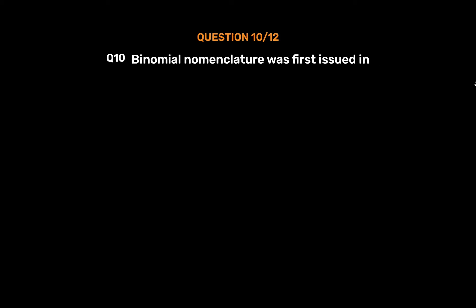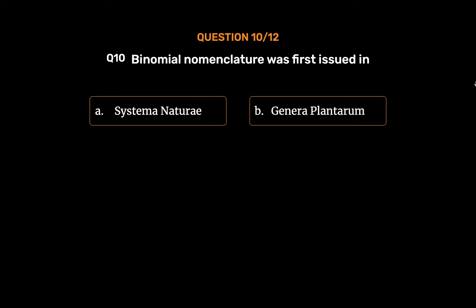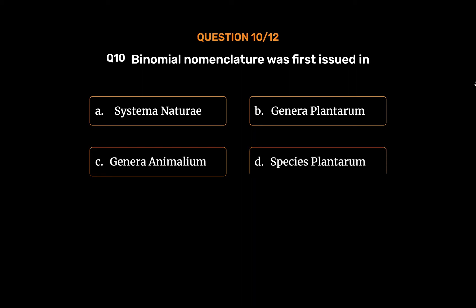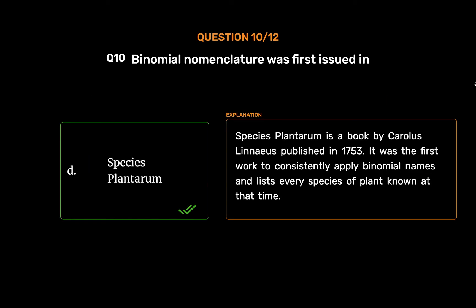Question No. 10. Binomial nomenclature was first issued in. Option A: Systema Naturae. Option B: Genera Plantarum. Option C: Genera Animalium. Option D: Species Plantarum. The correct answer is Option D: Species Plantarum. Species Plantarum is a book by Carolus Linnaeus published in 1753. It was the first work to consistently apply binomial names and lists every species of plant known at that time.